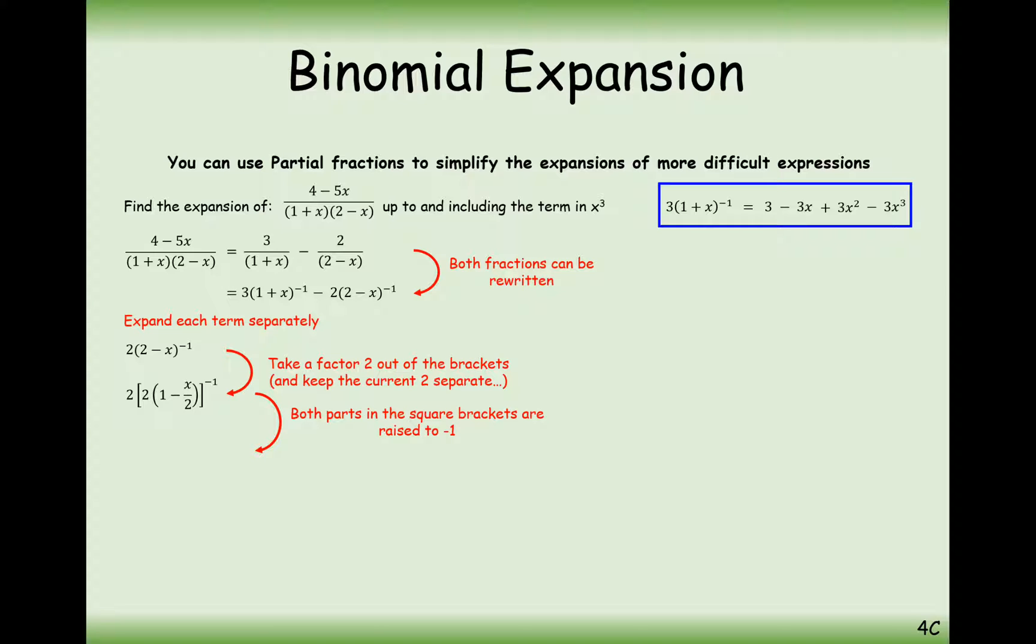Taking the 2 out of the brackets with the minus 1 power as well, that will turn it into a half. So now it's just 1 minus x over 2 to the power of minus 1. Just notice here and remind yourself that if you're taking a 2 out, you also need to divide the x term by 2 as well.